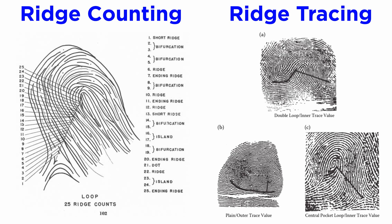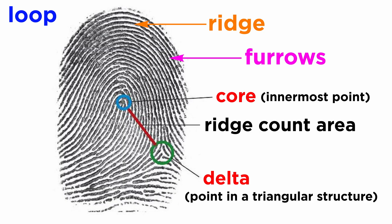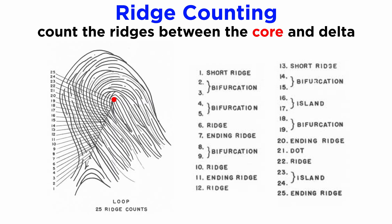They are as simple as the names suggest — for the former, we count ridges, and for the latter, we trace ridges. In ridge counting, all the ridges between the core and the delta are counted. We have already learned about the core and delta in the tutorial on types of fingerprint patterns. Recall that the core is the central point of a fingerprint pattern, and the delta is a triangular structure present in the pattern as shown here.